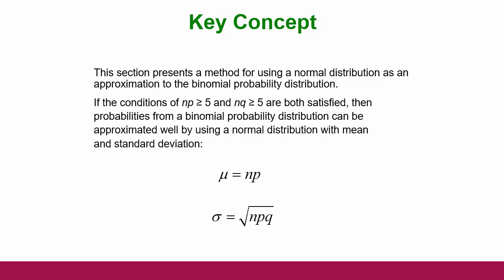Here's the key concept when we're trying to use the normal to approximate the binomial. There are certain conditions that have to be met. If n times p is greater than or equal to 5 and n times q is greater than or equal to 5 — and remember, n is your sample size and p is the probability of whatever characteristic you're testing for.